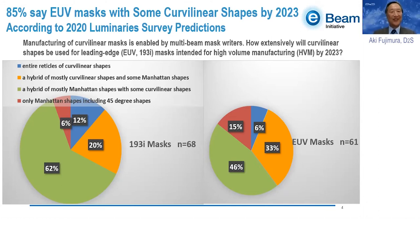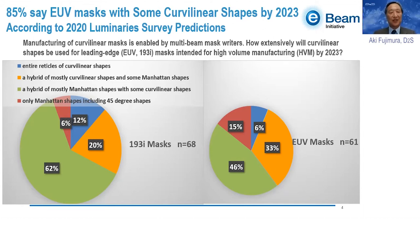This 85% — different from the 85% I mentioned before — says that even on EUV, which is presumably more precise and might have less need for curved linear shapes, 85% of luminaries say that at least some leading-edge masks in high-volume manufacturing by 2023 are going to have curved linear content.